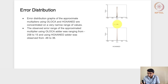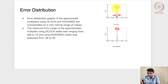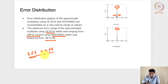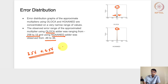For error distribution, OLOCA has a slightly wider distribution compared to HOANED, which is sharper with higher density at accurate results. OLOCA has an error range of roughly 258 to 15, while HOANED ranges from minus 46 to 36. To compute these statistics, all 256×256 input combinations for an 8-bit multiplier are evaluated, compared against exact values, and the error is plotted as a probability distribution.